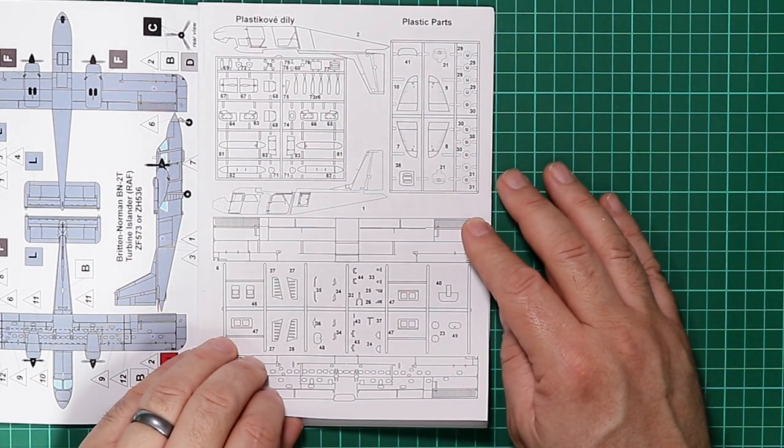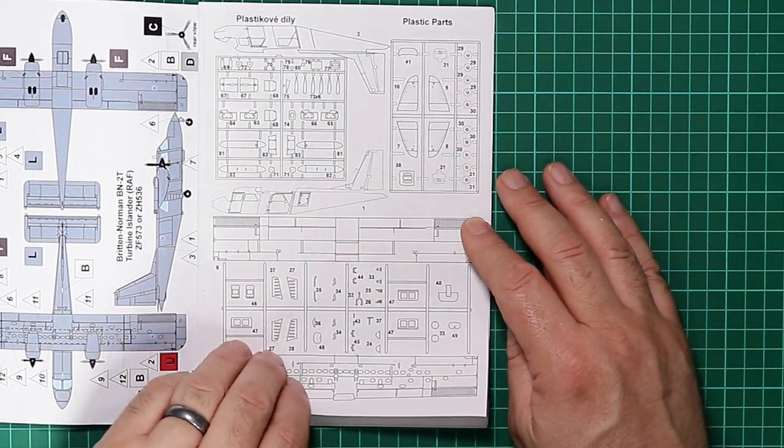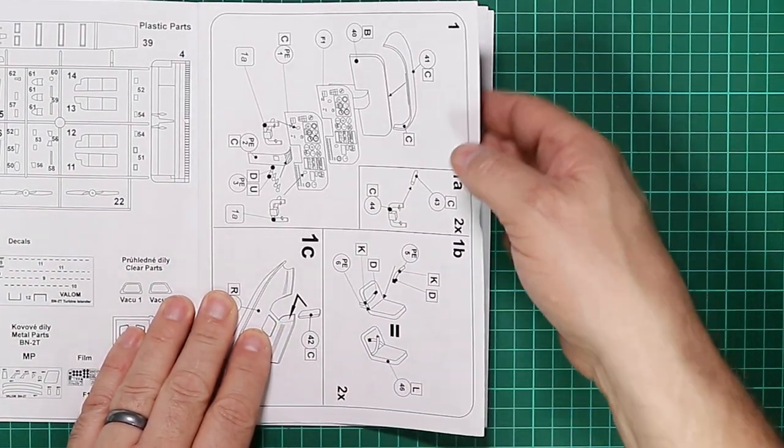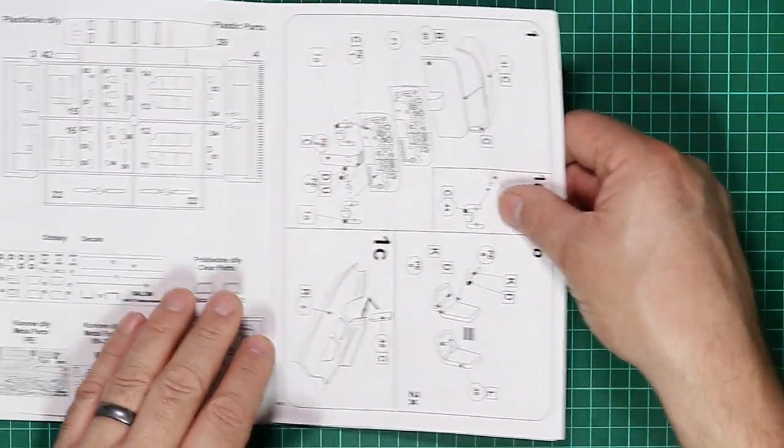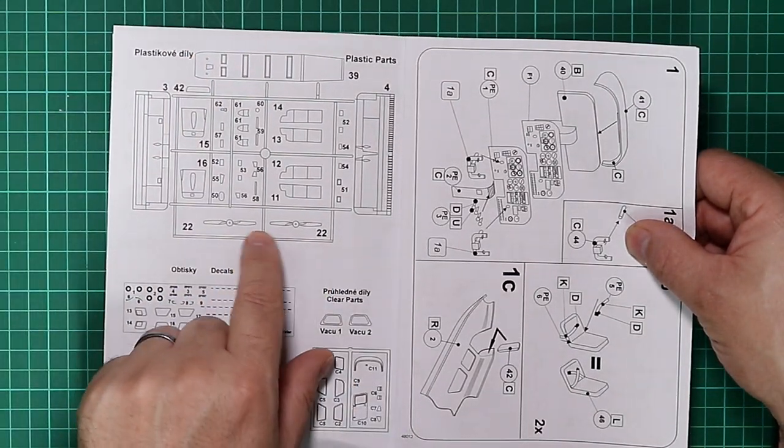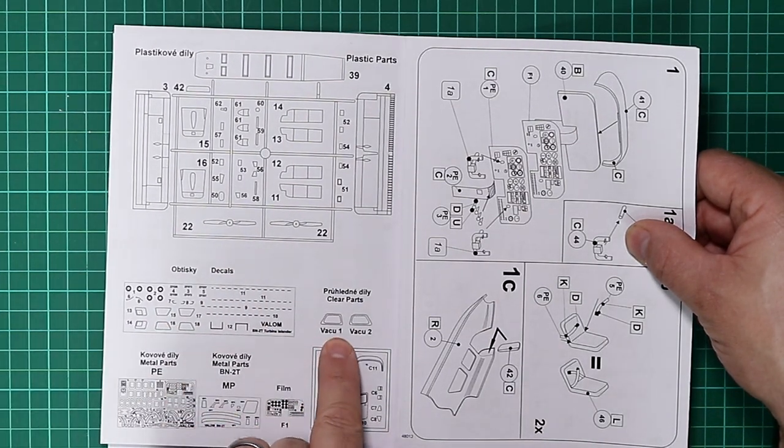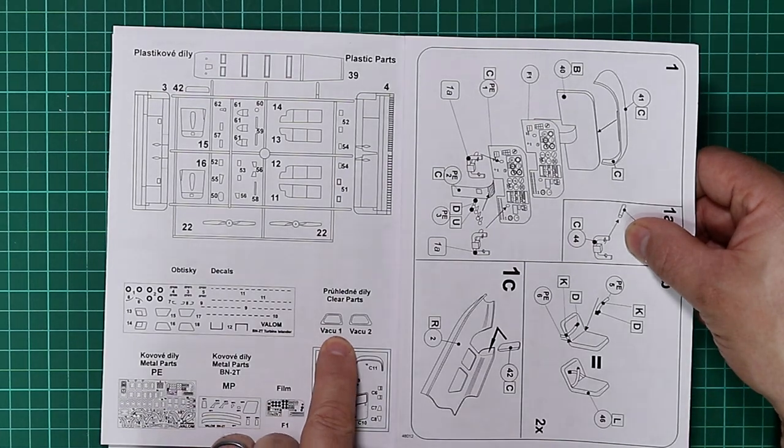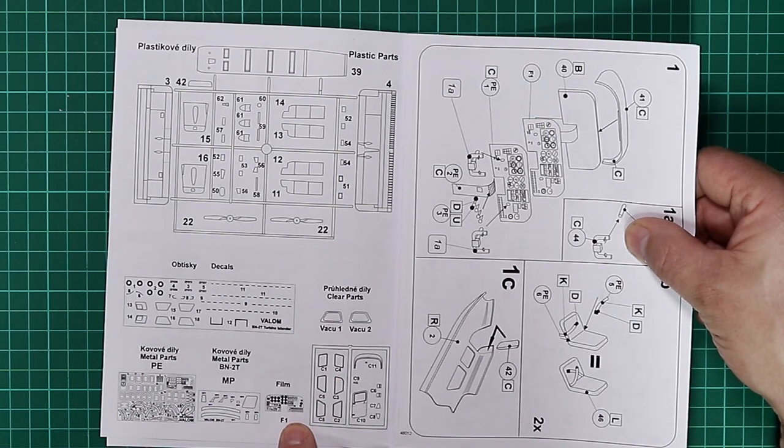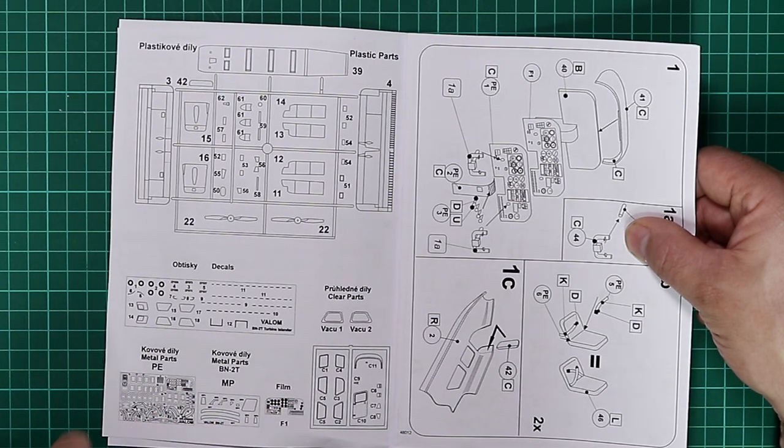You're going to have to just make sure you're getting the correct parts off the sprues there through assembly. Perhaps that is continued on the other page, and we've got the cabin floor, two-bladed props that aren't going to be used in this kit, decal sheet, vacuum formed clear parts for the cabin windows in this variant, normal clear parts, film for the instrumentation, and two little metal frets.